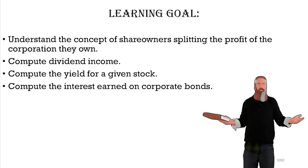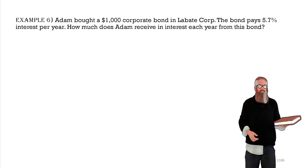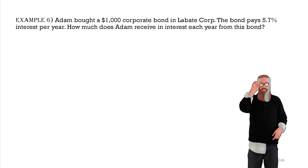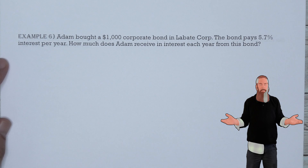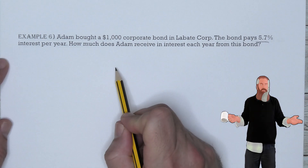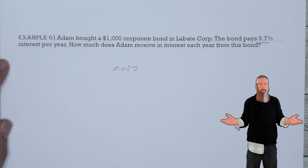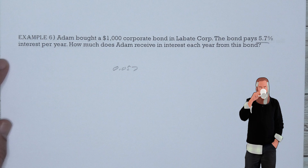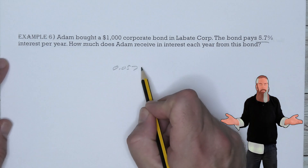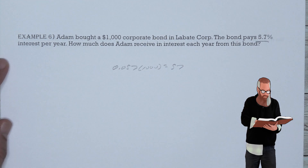Now let's compute interest earned on a corporate bond. Adam bought a $1,000 corporate bond in Labattcore. The bond pays 5.7% interest per year. How much does Adam receive in interest each year? To find the annual interest, convert the percentage to a decimal: 5.7% = 0.057. Multiply by the face value of $1,000: Adam receives $57 in annual interest.